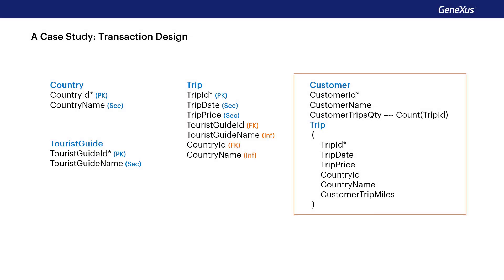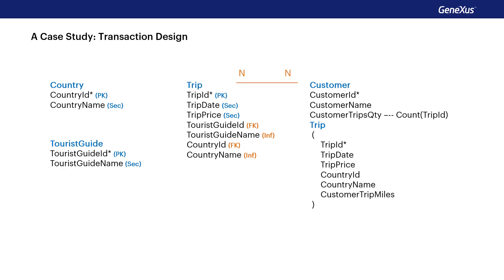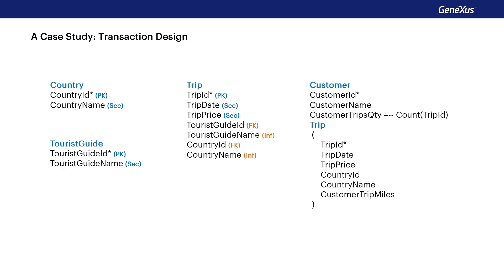Now let's look at the customer transaction. It's a two-level transaction with TripID as the primary key of the second level, indicating an n-to-n relationship between customer and trip. From this transaction design, GeneXus will create two tables: customer and customerTrip. Focusing on the first level, CustomerID is the primary key, CustomerName is the secondary attribute, and CustomerTripsQuantity has an associated calculation — it's a global formula, a calculated attribute that is not stored in the database.